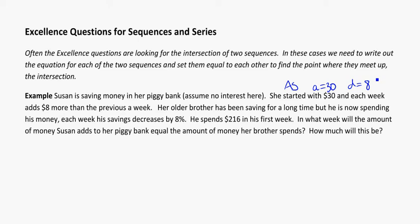Her older brother has been saving for a long time but he is now spending his money. Each week his savings decrease by 8%. That right there is a hint for me that we're looking at a geometric sequence for her brother. To find our r value, because that's a decrease, we're going to take 1 minus 8 divided by 100, and that's equal to 0.92. He spends $216 in his first week, so that's going to be our initial value there, our a, so a is 216 and r is equal to 0.92.